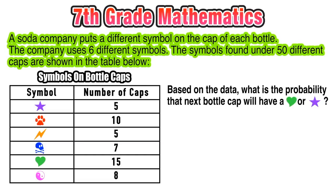So in this case, we have a soda company that puts a different symbol on the cap of every bottle. The company is using six different symbols, and we have a table that shows us the different symbols on the caps for 50 different bottles.